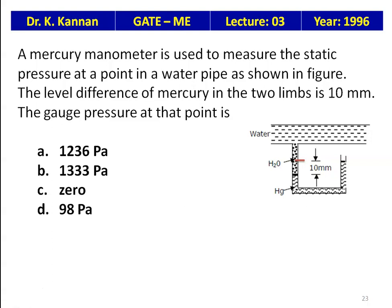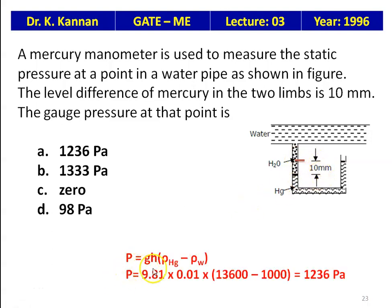A mercury manometer measures static pressure in a water pipe. The level difference of mercury in the two limbs is 10 mm. Gauge pressure P = g·h·(ρ_Hg − ρ_w) = 9.81 × 0.01 × (13600 − 1000) = 1236 Pa. The answer is 1236 Pa.